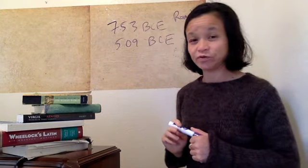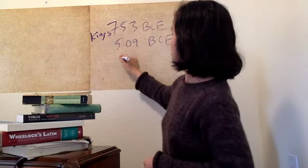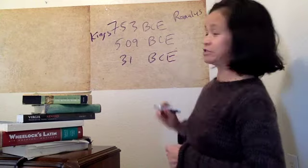The last king was Tarquinius Superbus and the Roman Republic starts until shall we say 31 BCE.